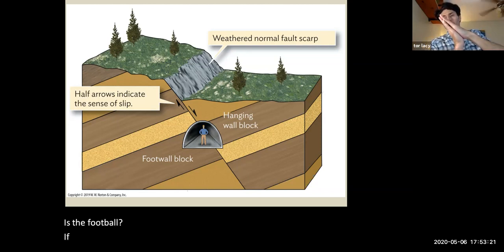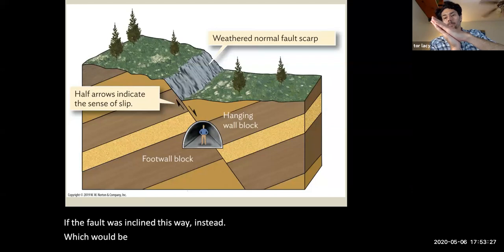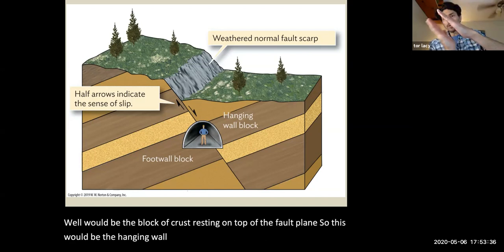If the fault was inclined this way instead, which would be the hanging wall? Well, it would be the block of crust resting on top of the fault plane. So this would be the hanging wall side. This would be the foot wall side.